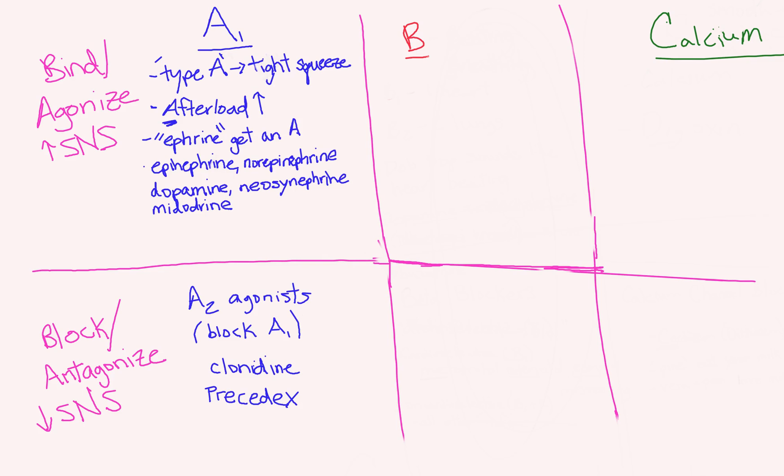In the first video, we talked about how alpha agonists cause vasoconstriction because type A people have a tight squeeze, a tight grip on what's going on. We have A for afterload, so if you bind to alpha, you're going to increase your afterload. Also, a lot of these drugs end in 'ephrine' because type A people want to get an A on every test. Some examples are listed below.